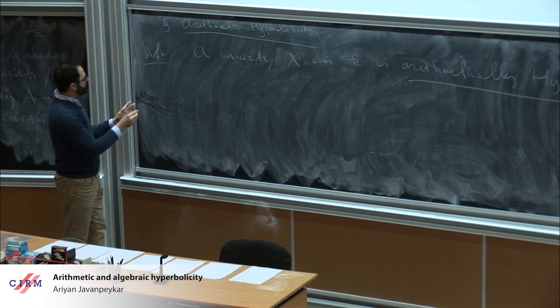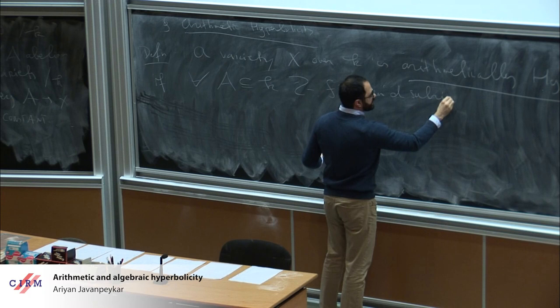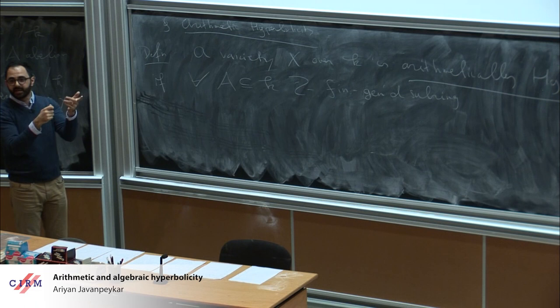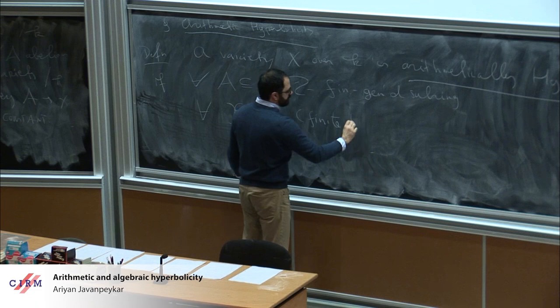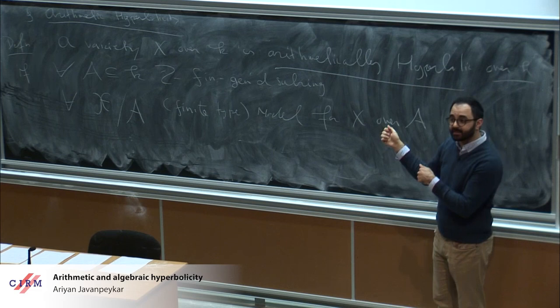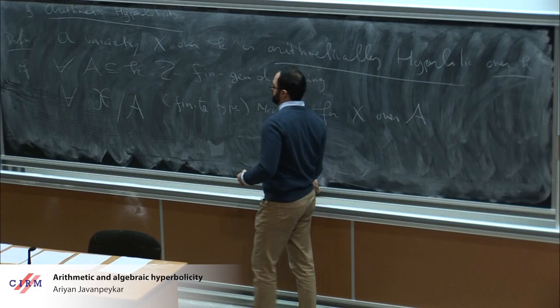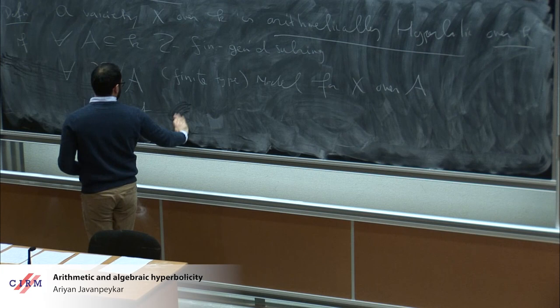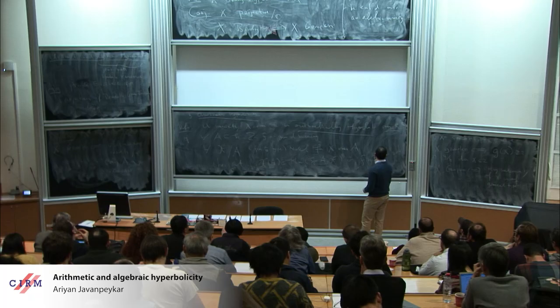To speak about integral points requires choosing equations, so the definition is: for every finitely generated subring of your field K — think of Z itself, or any number ring, or Z adjoined to pi and e^2 if K is C — and for every model for X (meaning a finite type scheme over A isomorphic to X over K, i.e., a choice of equations defining X over A), the set of A-valued points is finite.